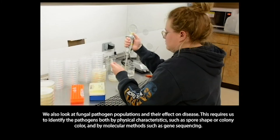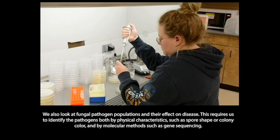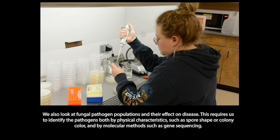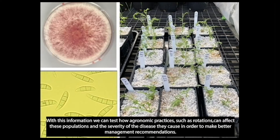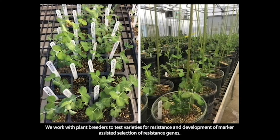An accurate diagnosis is essential for making good recommendations to farmers and homeowners. We also look at fungal pathogen populations and their effect on disease. This requires us to identify the pathogens both by physical characteristics such as spore shape or colony color, and by molecular methods such as gene sequencing. We can then take these fungi and test them for the ability to cause disease and observe how severe the symptoms are in the greenhouse. With this information, we can test how agronomic practices such as crop rotations can affect these populations and the severity of the disease they cause, in order to make better management recommendations.